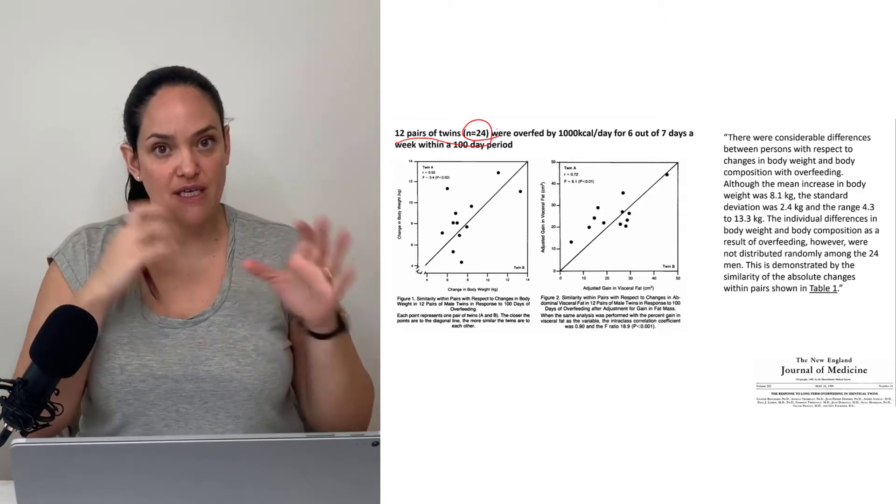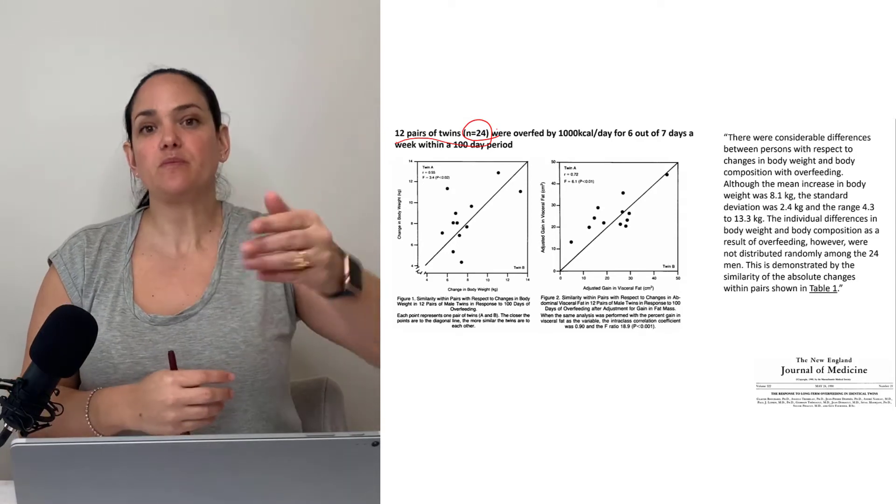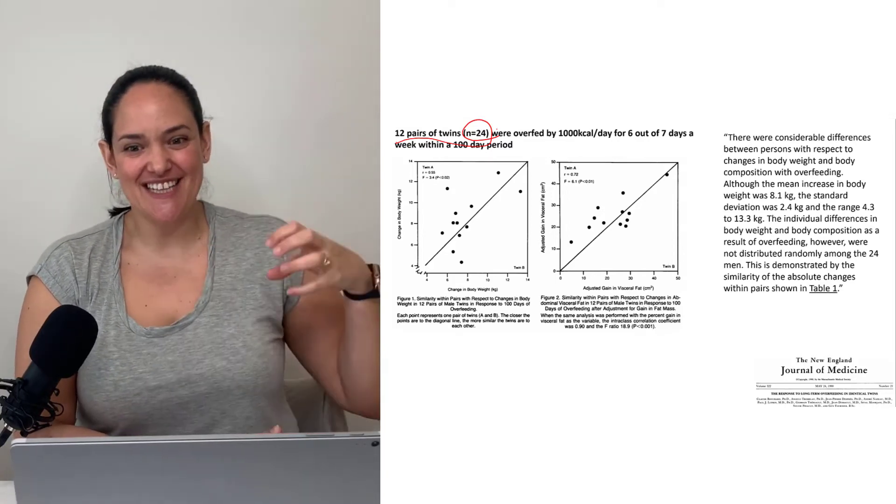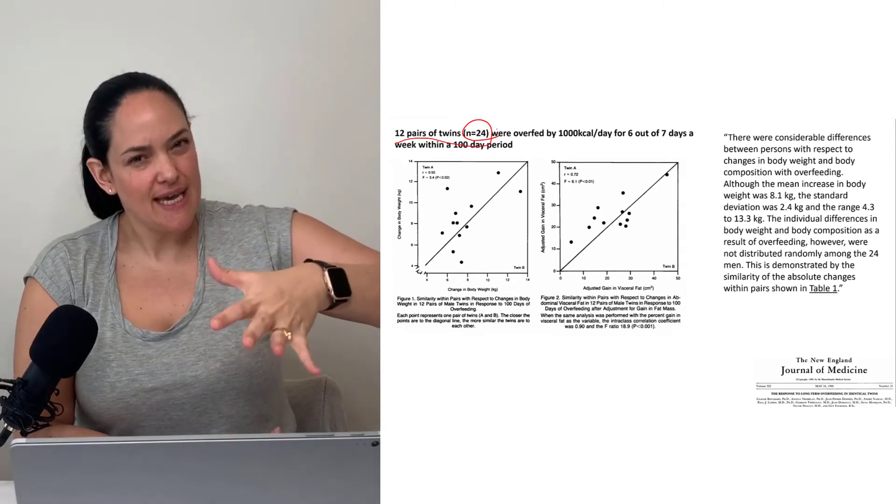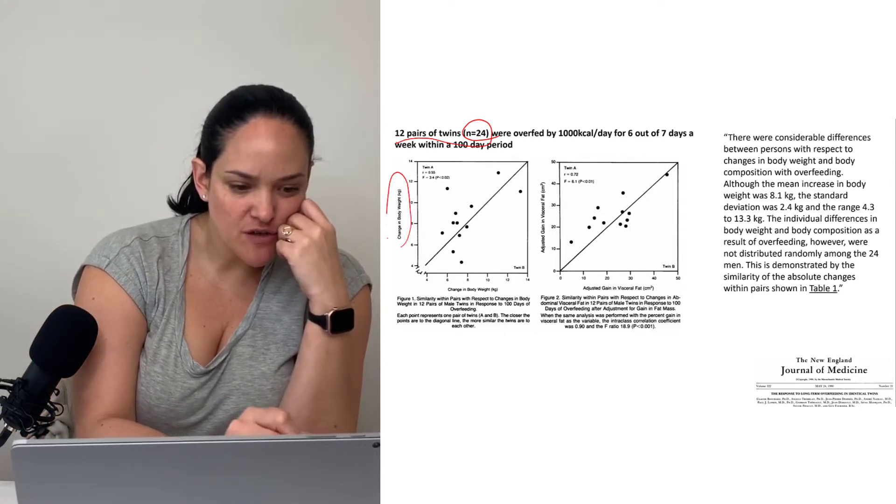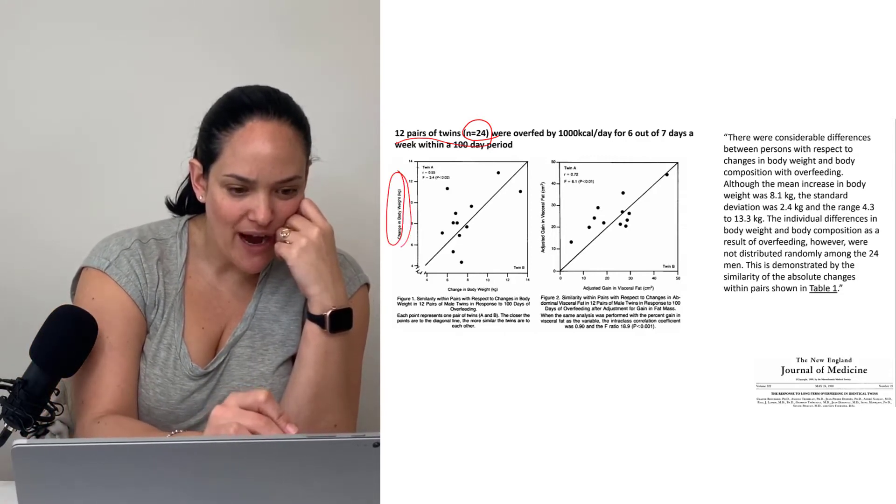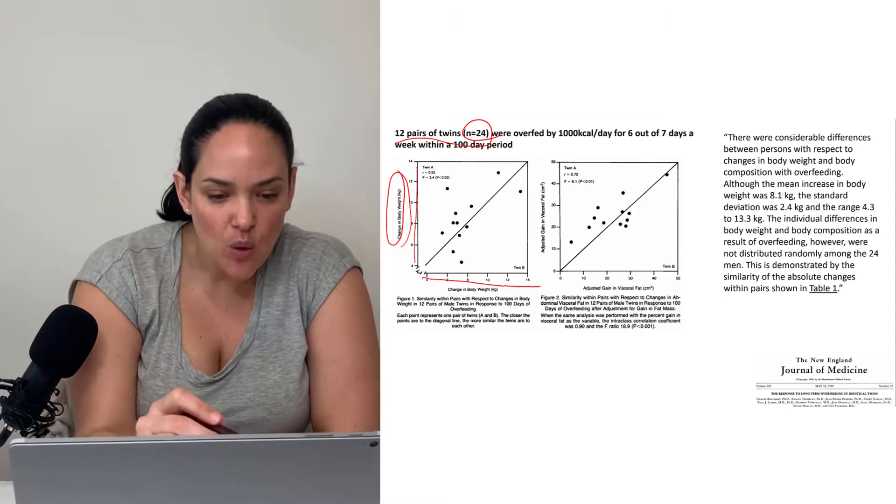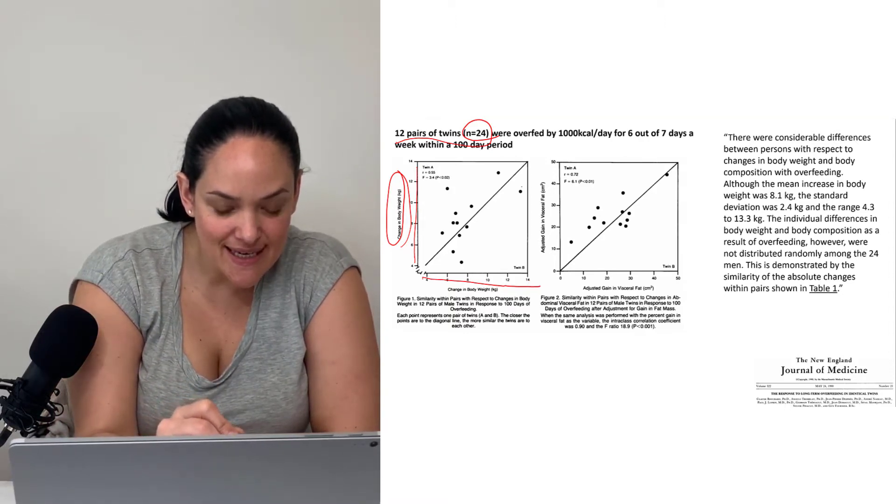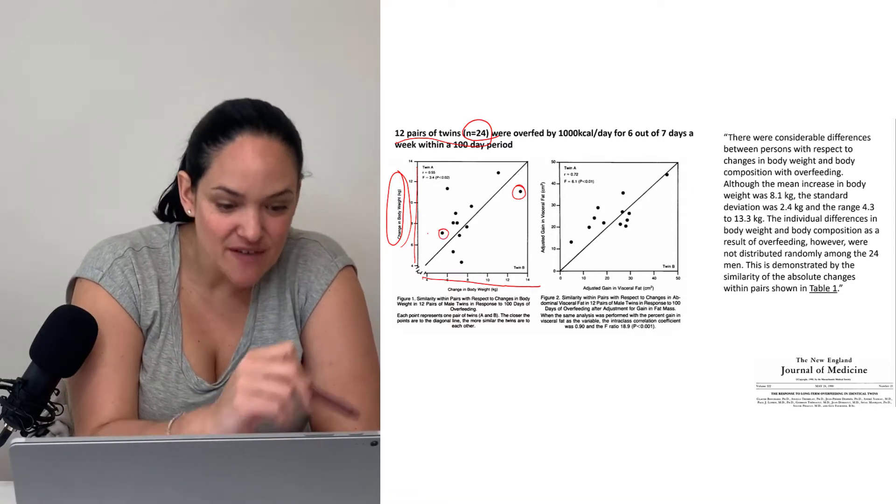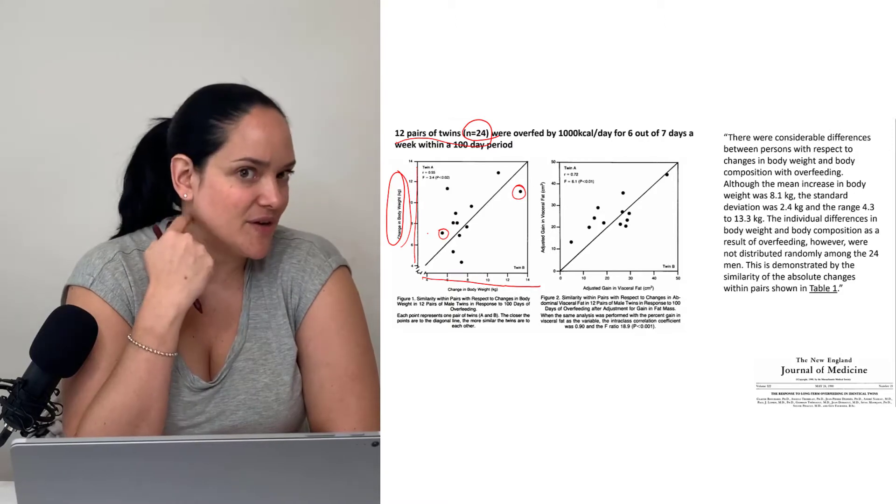So you would assume if everyone is eating exactly the same extra calories, we would gain about the same extra weight, but that's not what they found. Looking at the changes in body weight, some twins gained quite a bit of weight, up to 13 kilograms in that 100-day period, while other twins gained significantly less, about 5 kilograms in that same period.